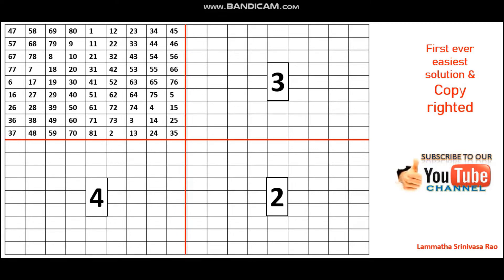You know how to fill odd-number magic squares — that is 3 by 3, 5 by 5, 7 by 7, etc. If you don't know, just go back to our channel and find the playlist on how to solve 3 by 3, 5 by 5, etc. Accordingly, you can solve this 9 by 9 magic square. So numbers 1 to 81 you can fill in this way.